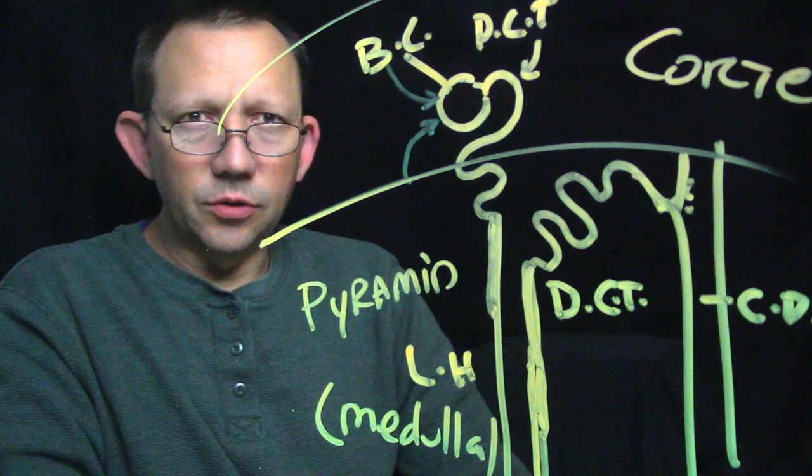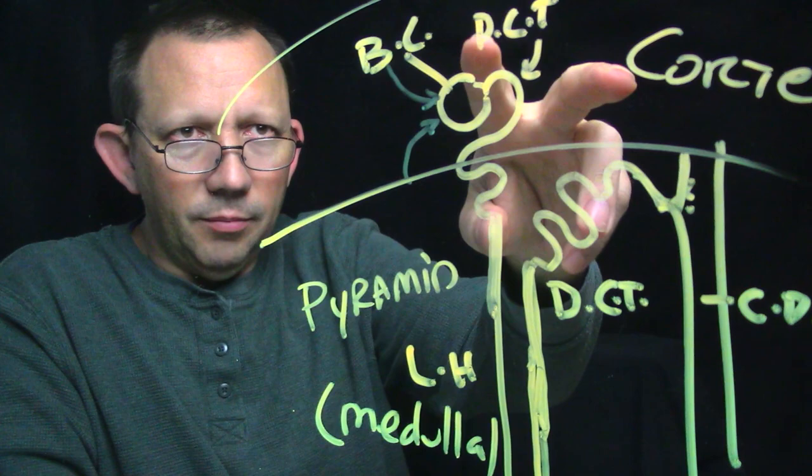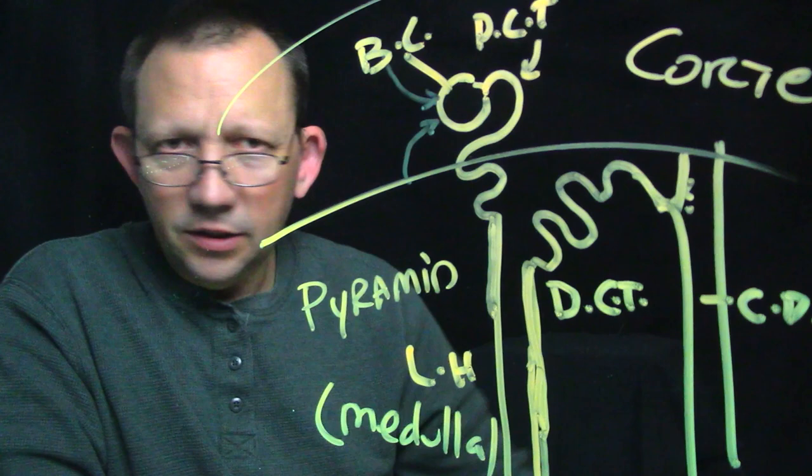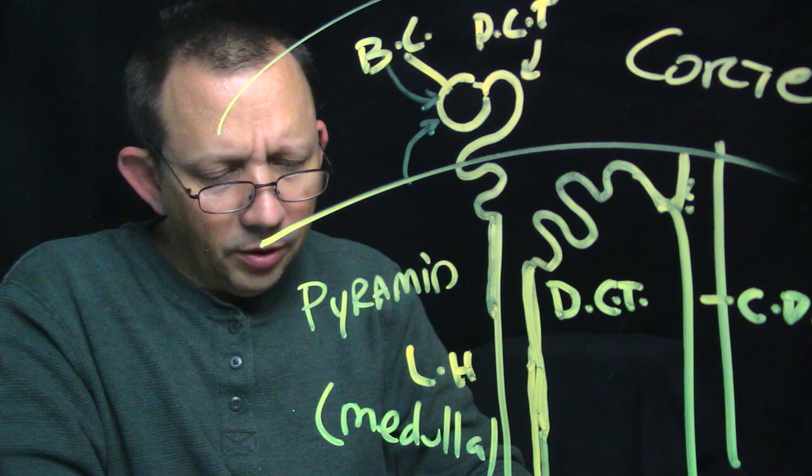There you go — there's basically the nephron. That's the design, the basic anatomy of it. Now if you look at the book it is way more complex, because the distal convoluted tubule and the proximal convoluted tubule are all mixed up in there and it's really hard to tell what's what. So here we just split it up — this is just a simplified diagram.